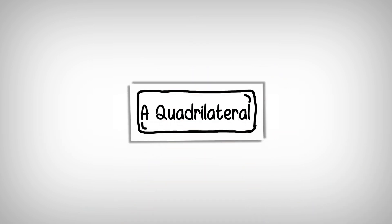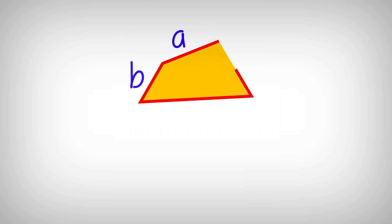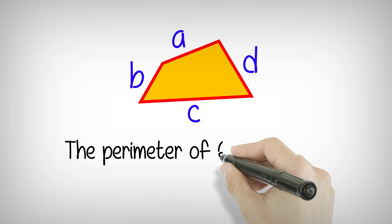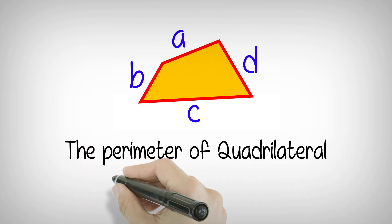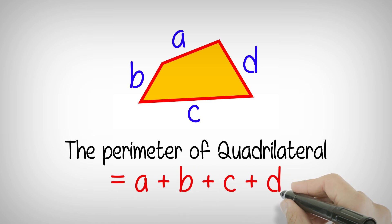To calculate the perimeter of a quadrilateral, which is any 4-sided shape, the perimeter is a plus b plus c plus d. Again, very simple.